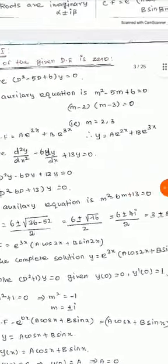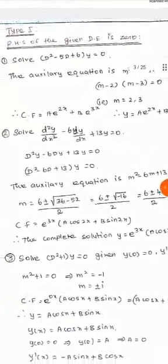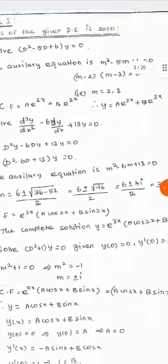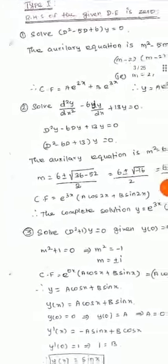Since there is no particular integral, the complementary function is the complete solution. Therefore the complete solution is y = a·e^(2x) + b·e^(3x).